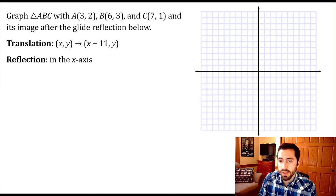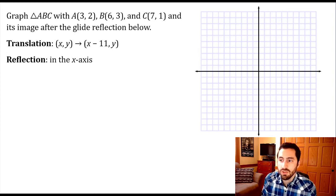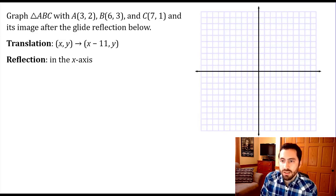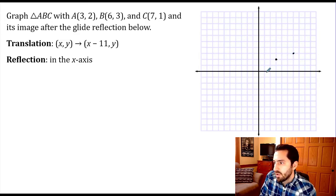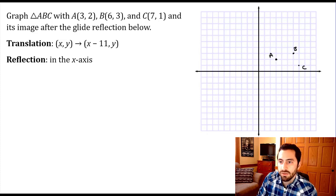Now let's do a specific example. I have triangle ABC with vertices at (3, 2), (6, 3), and (7, 1). Let's start by graphing this triangle. We have point A at (3, 2), point B at (6, 3) — one two three four five six, then up three — and point C at (7, 1) — up to seven, then up one.